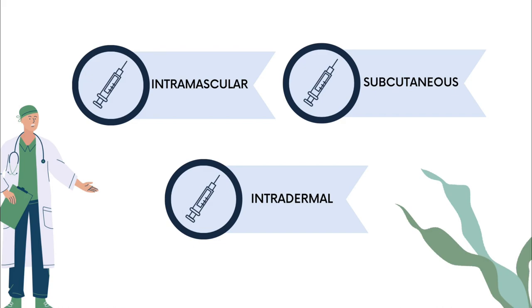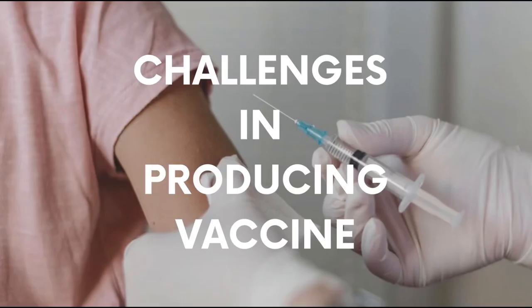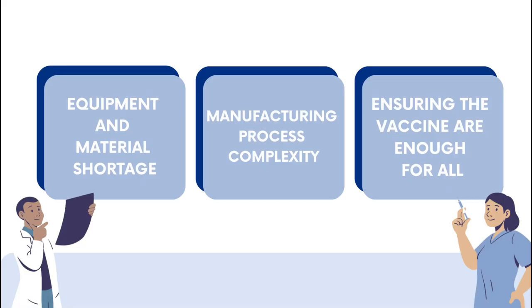Let us move to the last part, which is the challenges in producing a vaccine. The first is equipment and material shortage, such as natural rubber, vials, syringes, flow filters, and cobalt-60 for irradiation and sterilization. The second is manufacturing process complexity, as any drugs and vaccines must undergo a long process to get approval by the WHO before distribution. The last challenge is ensuring the vaccine produced is sufficient for all.